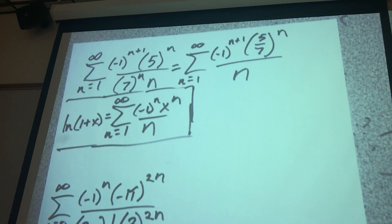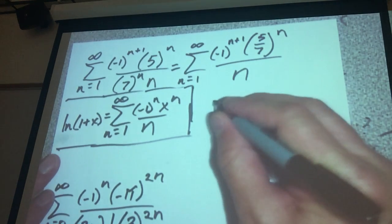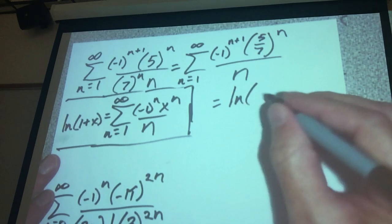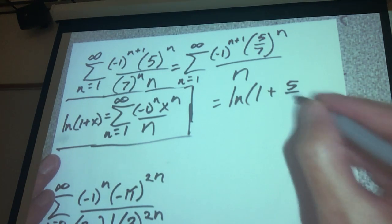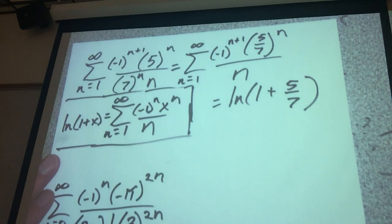So this thing right here would be the natural log of 1 plus 5 divided by 7. That's it, that's the answer to it.